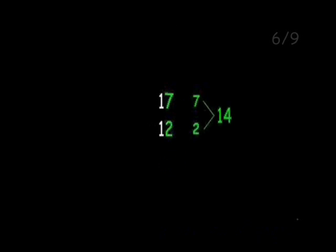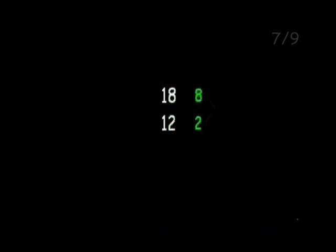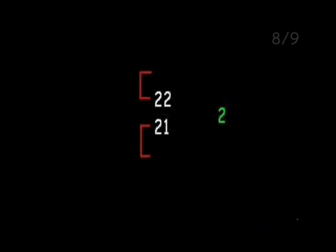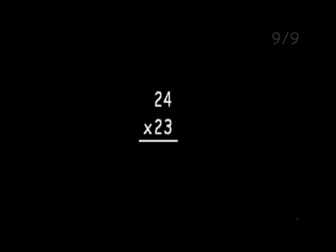Seventeen times twelve is fourteen more than one hundred ninety. Eighteen times twelve is sixteen more than two hundred, no matter how you look at it. Twenty-two times twenty-one is two more than four hundred sixty. Twenty-four times twenty-three is twelve more than five hundred forty.